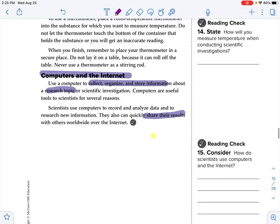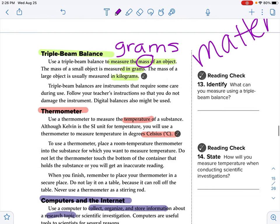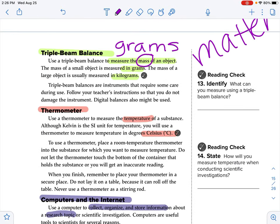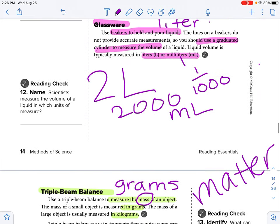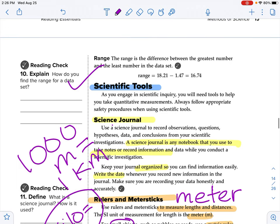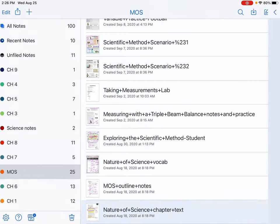Then our last one in this section is computers and Internet. Use a computer to collect, organize, and store information about a research topic or scientific investigation. Computers are useful tools for scientists for several reasons. Scientists use computers to record and analyze data and to research new information. They can also quickly share the results with other worldwide over the Internet. Okay, so make sure that you have all of this marked and highlighted. That's going to be helpful for you when you go to do your assignment that you are turning in for me. Okay, alright.